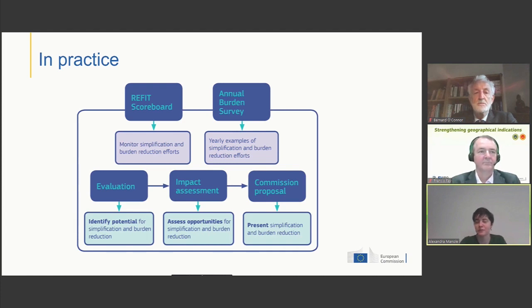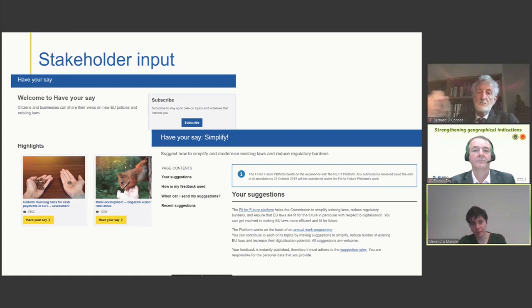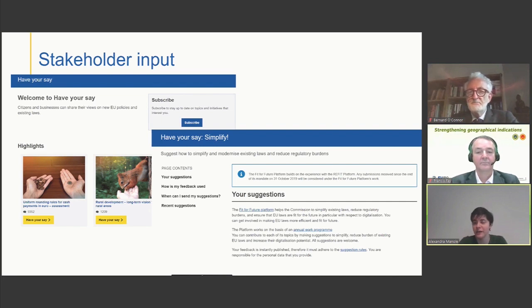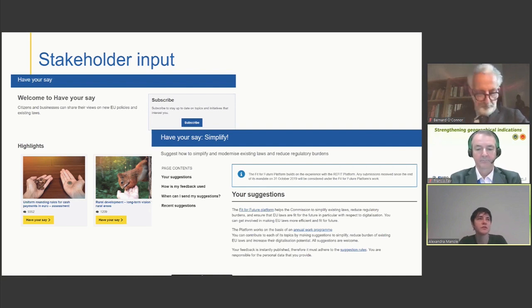Every year we put forward an annual burden survey, which shows illustrative examples and main outcomes from the year that just finished. I mentioned stakeholder input — this is how we collect it. We have the Have Your Say Portal, which puts in a single place all the possibilities for consultation in the context of evaluations and impact assessments. And then there is Have Your Say Simplify, which is specifically there for suggestions on simplification and burden reduction. This input is processed by the Fit4Future platform, which helps the Commission identify what areas could be further simplified or streamlined, for instance in terms of digitalization.